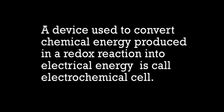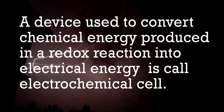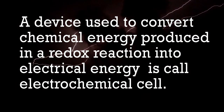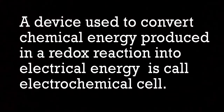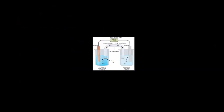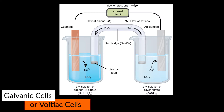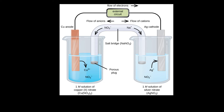A device used to convert the chemical energy produced in a redox reaction into electrical energy is called an electrochemical cell. These are also known as galvanic or voltaic cells, after the names Luigi Galvani and Alessandro Volta, who were pioneers in this field.